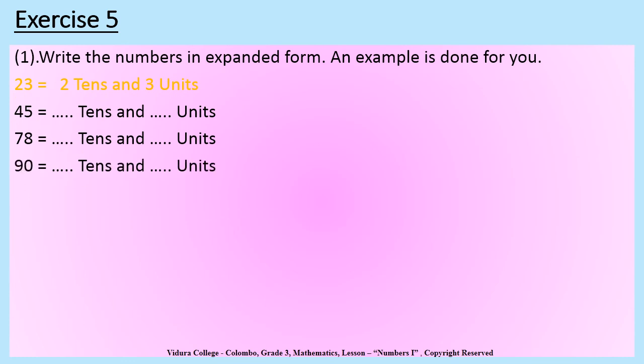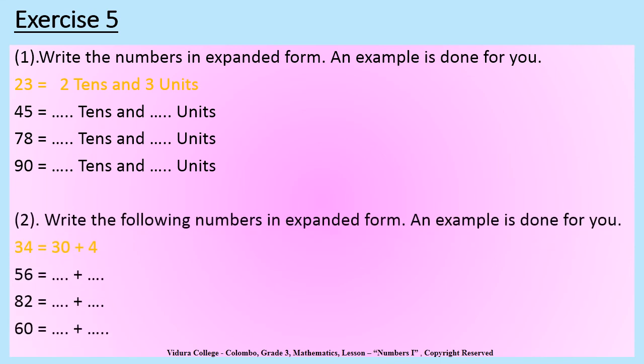Exercise 5: Write the numbers in expanded form. An example is done for you. They have represented number 23 — in 23, there are two tens and three units. You have to represent the rest of the numbers in tens and units in the same way. For example, they have represented 34, and the answer is 30 plus 4. So you should represent the rest of the numbers in the same way by looking at the example.